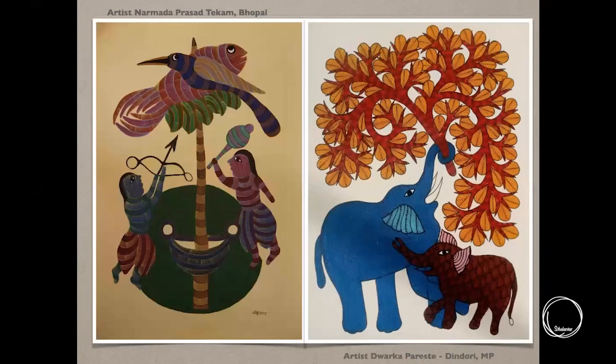On the left, the painting is done by artist Narmada Prasad Tekam ji, a very experienced and senior artist of the community who has received several state and national recognitions for his contribution to Gond art. The painting depicts the incident of how Arjun pierces the eye of the fish — the 'Matsya Bhedan' incident from the Mahabharata — from the perspective of the Gond people. On the right we can see animal motifs and the tree of life.